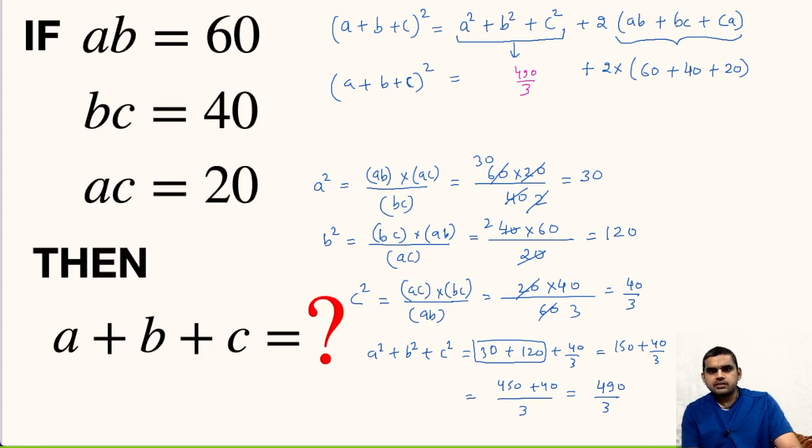Let us erase this box. Now we have to compute this. 60 plus 40 is 100, 100 plus 20 is 120, 120 times 2 is 240.